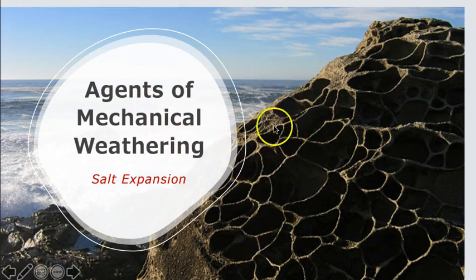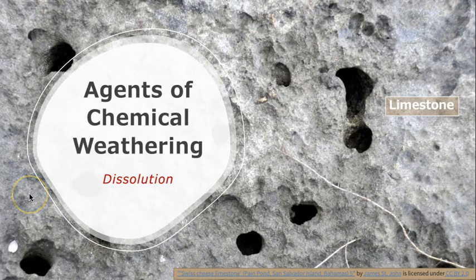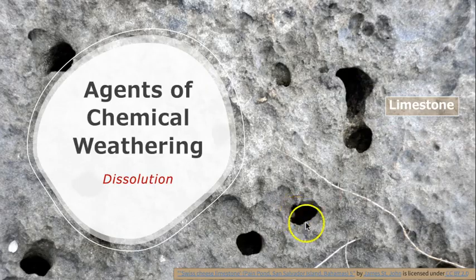This unusual honeycomb appearance on the rock face here is a result of salt expansion. Chemical weathering weakens rock through chemical reactions with the minerals contained in the rock. The reactions dissolve the minerals or change them into new minerals that are weaker than the original mineral. Dissolution happens when carbonic acid reacts with minerals in rock. Carbonic acid comes from acid rain, which forms in the atmosphere when carbon dioxide is dissolved in water, or when water is acidified by organic matter in soil. When the acidic water comes into contact with soluble minerals like the calcite in limestone, dissolution happens, dissolving the minerals and breaking down the rock.